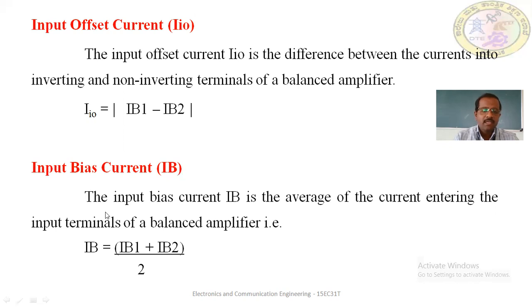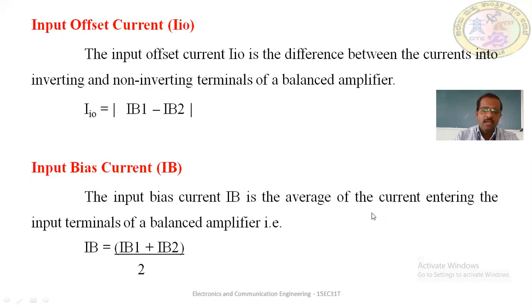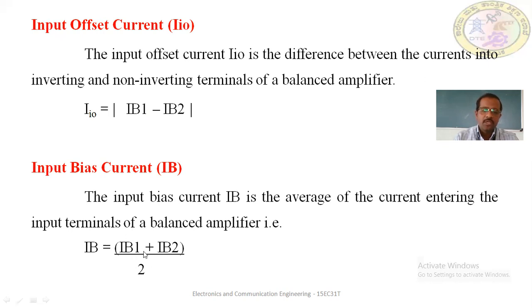The input bias current IB is the average of the currents entering the input terminals of the balanced amplifier. That is, IB = (IB1 + IB2) / 2. This is the input bias current.